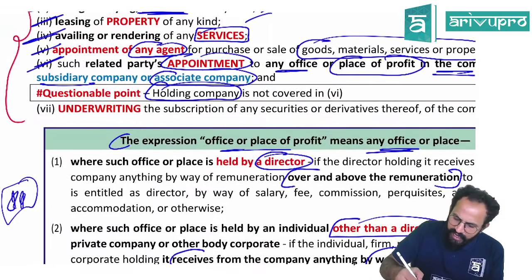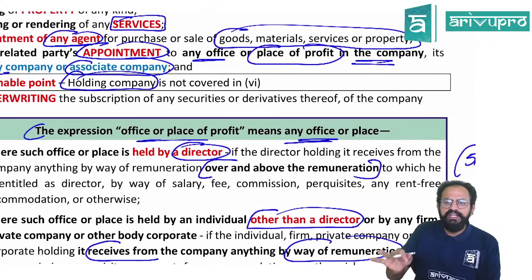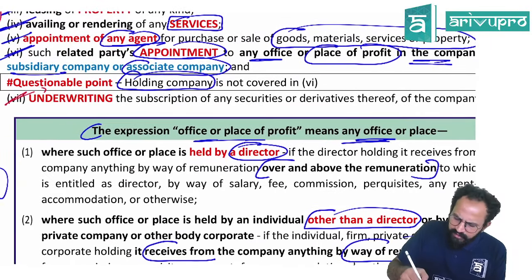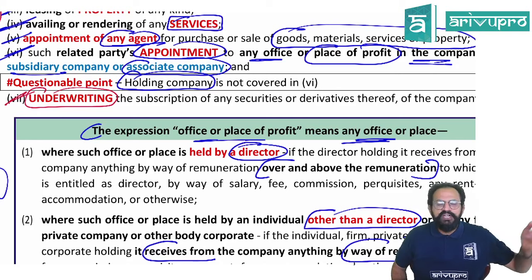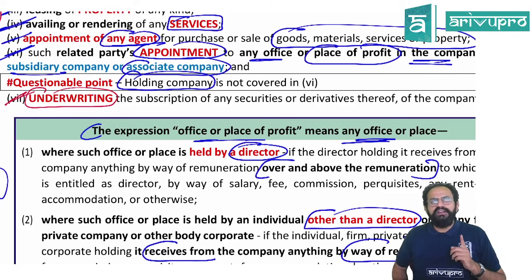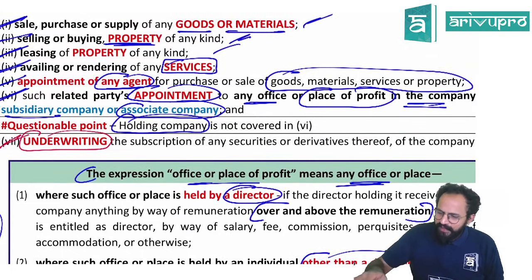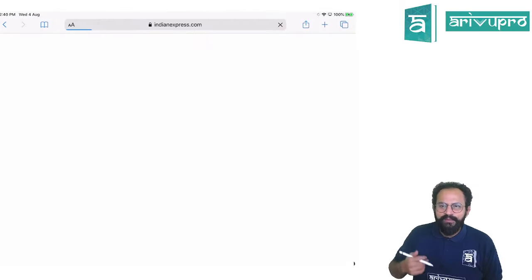(7) Underwriting the subscription of any securities or derivatives of the company. If the company is going for an IPO and the underwriter is a related party, the company will obviously pay more commission. So if you are appointing a related party as underwriter, you need to take board approval.